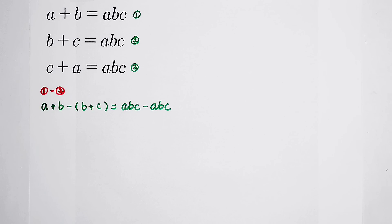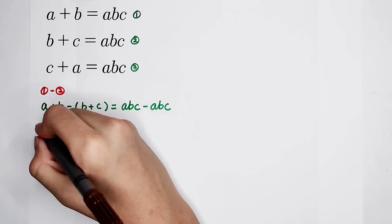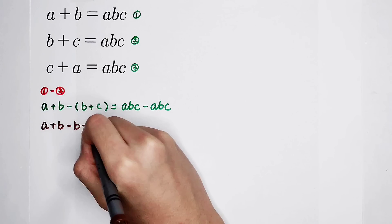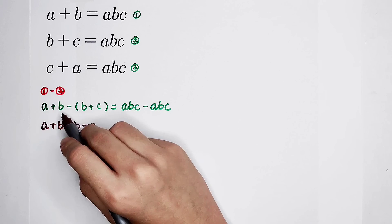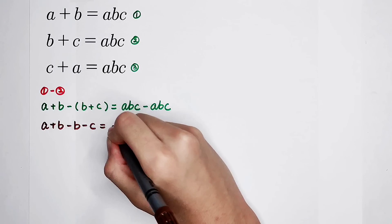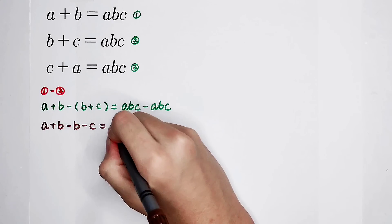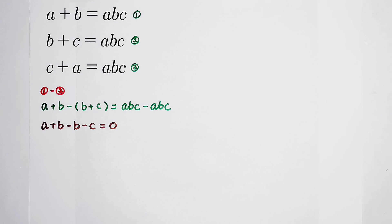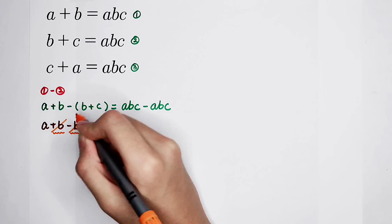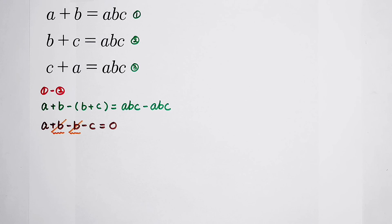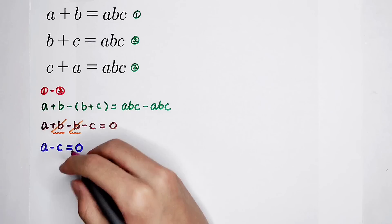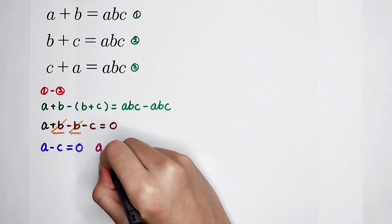What's the left-hand side? It's very wonderful. A plus B minus B minus C equals ABC minus ABC, which is 0. The B terms cancel, and then A minus C is equal to 0.